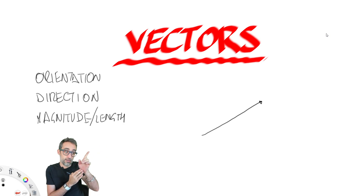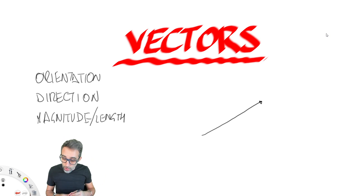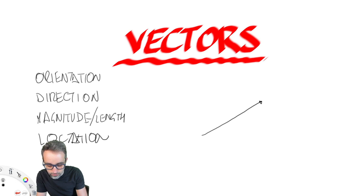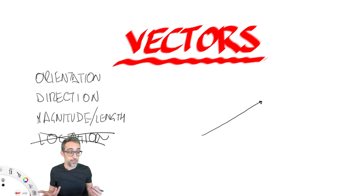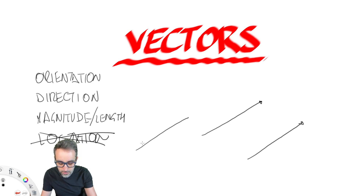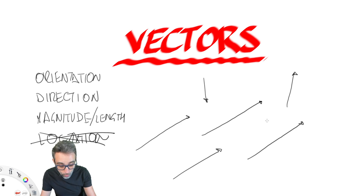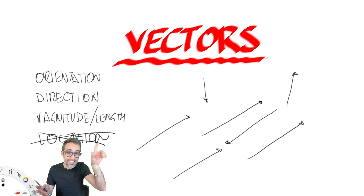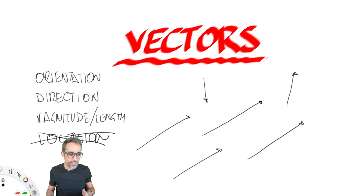They also represent a magnitude or length. So the same orientation and direction can be stronger or weaker. But what they do not represent — and this is very important to understand — is location in 3D space. That's what points are meant for. The idea is that this vector I've drawn here would be the same as this one and the same as this one, but it would be different from others. So a vector is simply a magnitude in three-dimensional space pointing in some direction with some strength, but can be represented anywhere in 3D space.